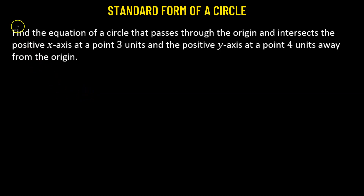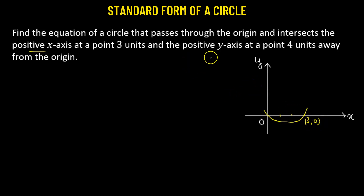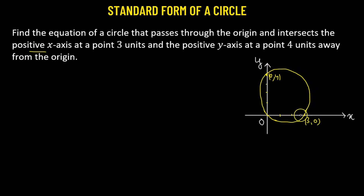Let's try to understand this particular problem. We have a circle that passes through the origin. There's a condition that the circle is going to intersect the positive x-axis at 3 units away from the origin, so it passes through the point (3, 0). It also passes through the positive y-axis at 4 units away from the origin, so it passes through the point (0, 4). This is the circle and we need to obtain its equation.